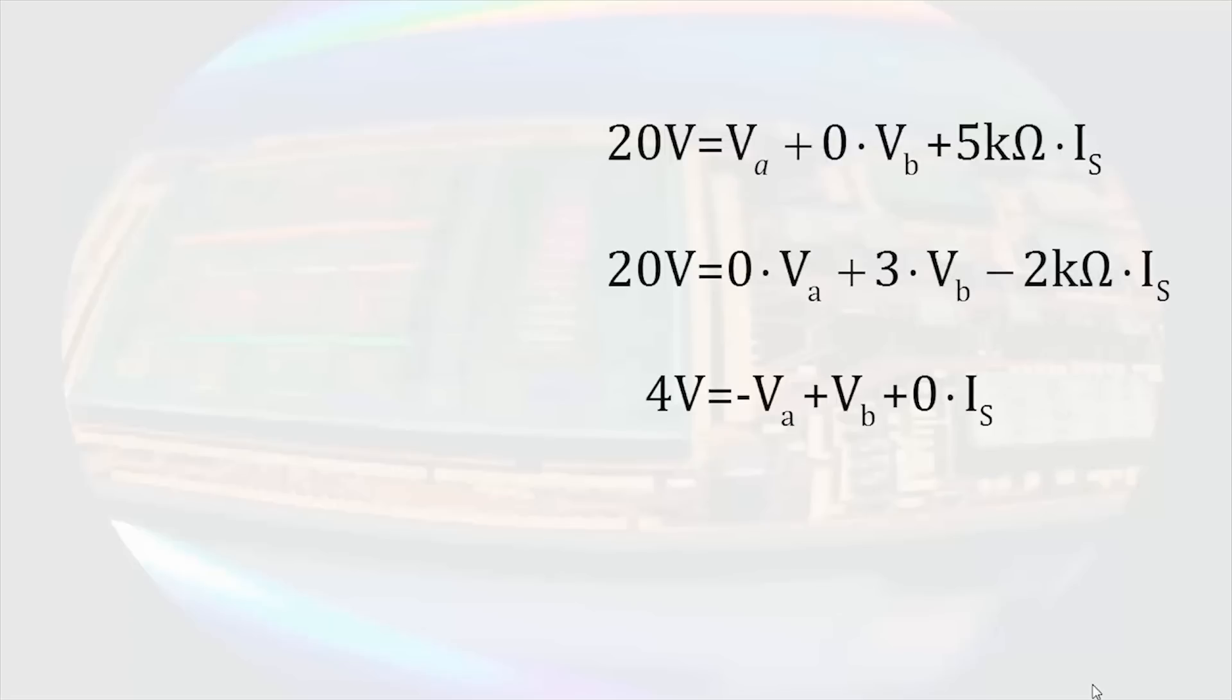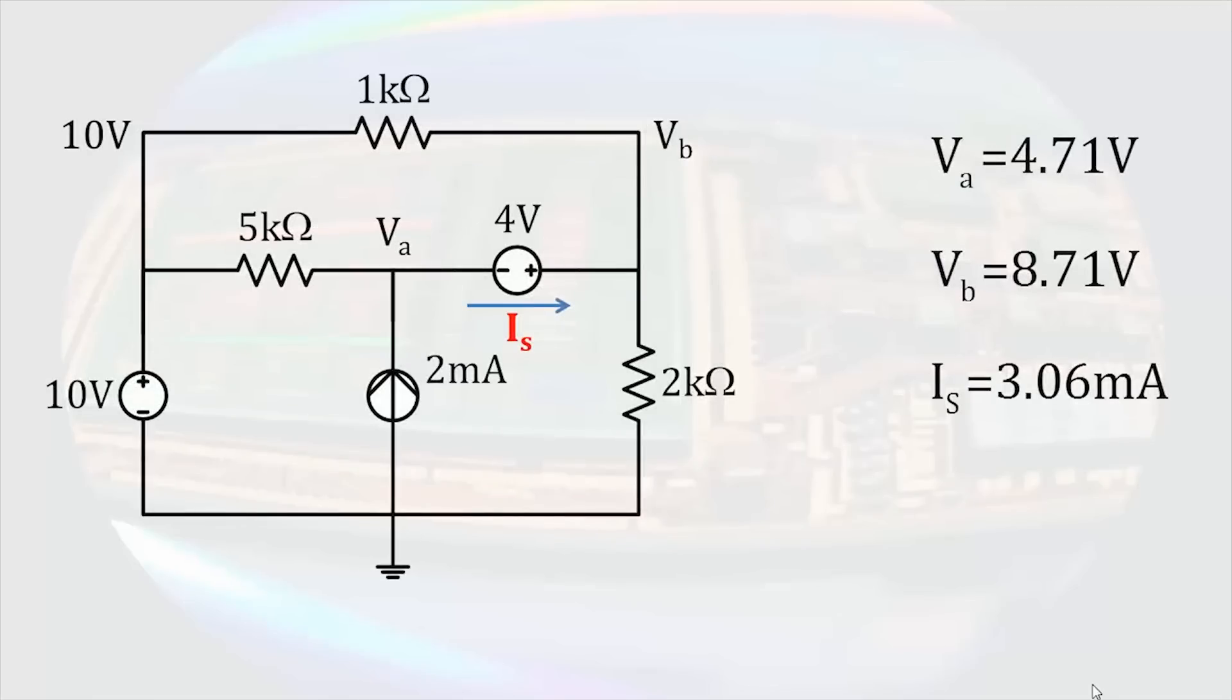Let's begin by multiplying through each of the equations by the largest common denominator. The equations can then be arranged so that they can be easily put into matrices. Solving the system results in VA equal to 4.71 volts, VB equal to 8.71 volts, and the current through the 4 volt source is 3.06 milliamps.